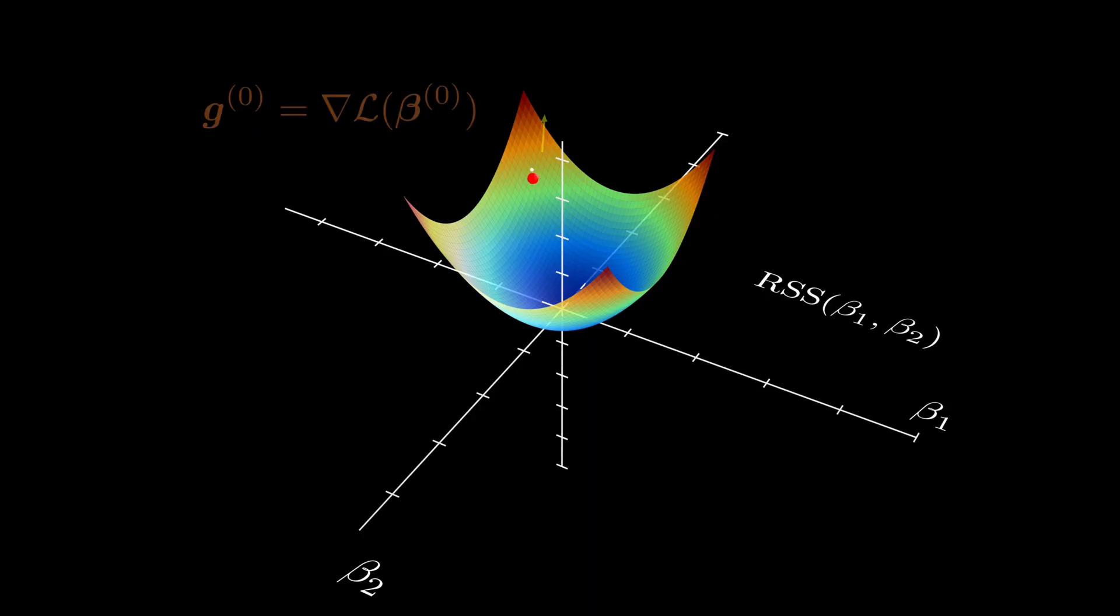Next, we take a step in the negative gradient direction. Here, eta is a small positive number called the learning rate. It controls how big a step we take.